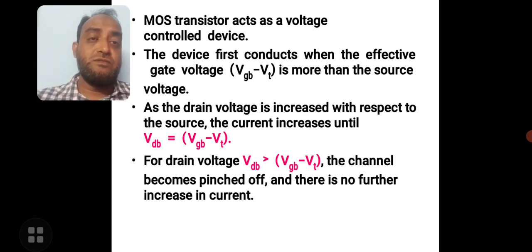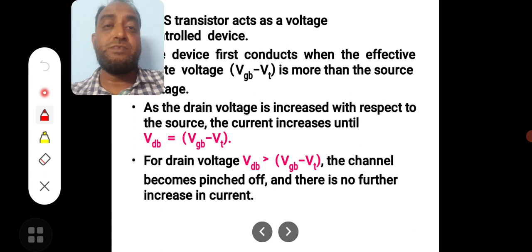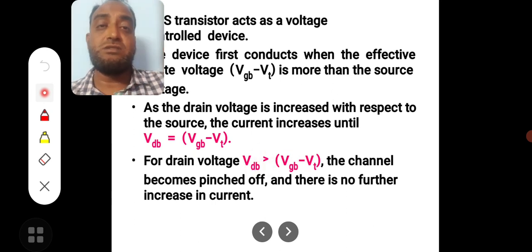The drain voltage Vdb, when the drain voltage Vdb is greater than Vgs minus Vt, then the channel becomes pinched off, which we are calling it as saturation region. The previous case we are calling it as active region. This we are calling it as resistive region, and this we are calling it as saturation region.